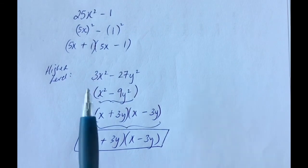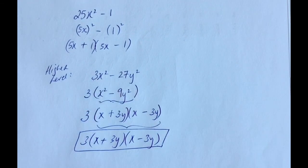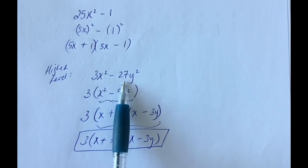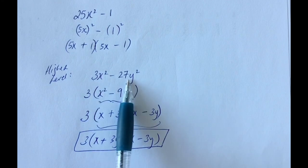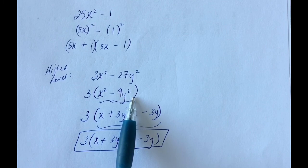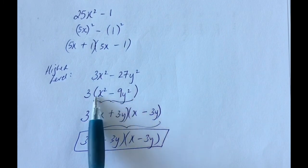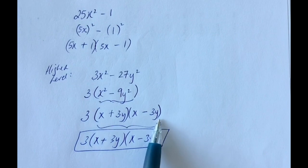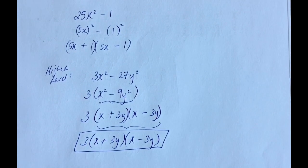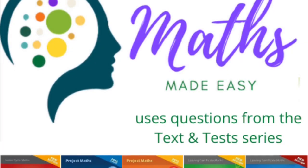At higher level, watch out for that extra step. If at first it looks like the difference of two squares but isn't quite when you look more closely, pull out the common term — and then most likely what you're left with is the difference of two squares. Further factorize it, and keep everything together in your final answer.